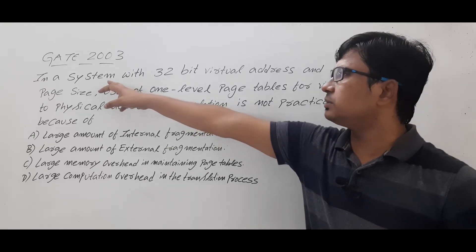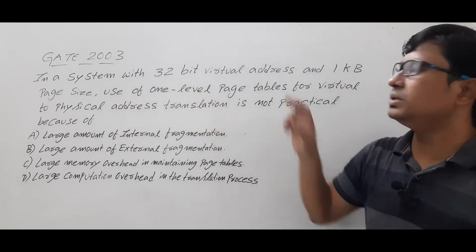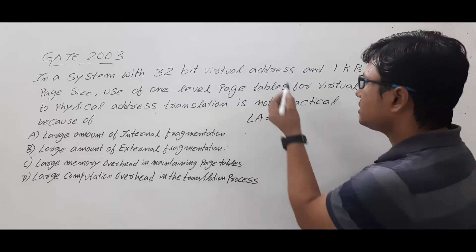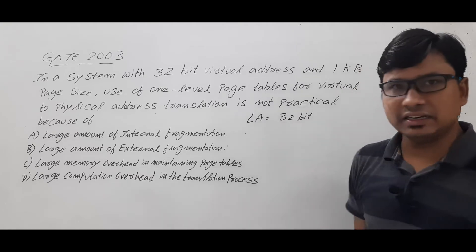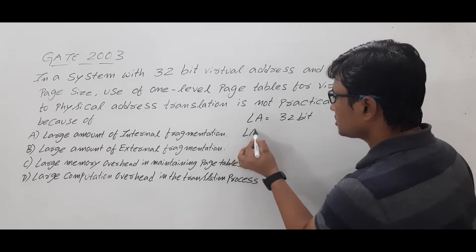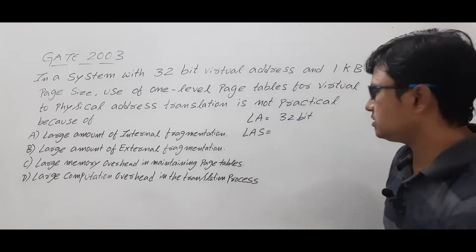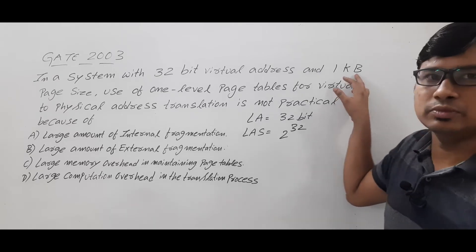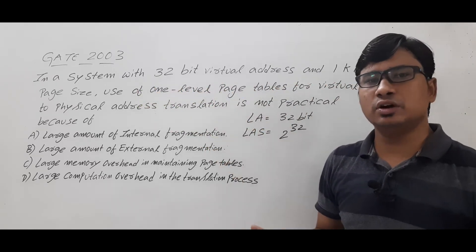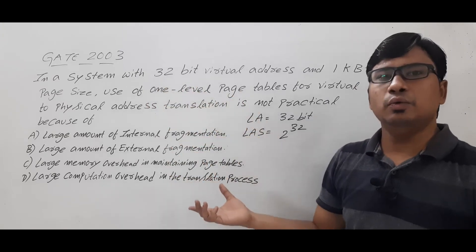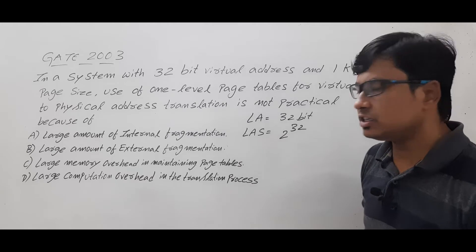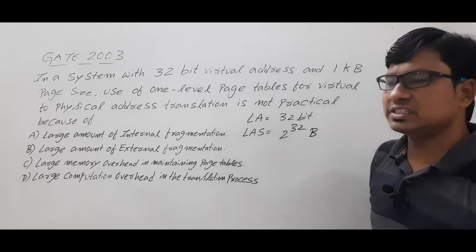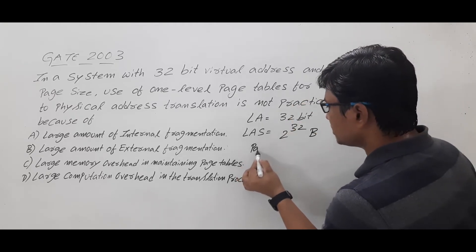If you look at the first statement in the given question — in a system with 32-bit virtual address — the virtual address is the same as the logical address. Since they have provided 32-bit, logical address is 32-bit. From the logical address we can find the logical address space, which is 2^32. Since nowhere they mention word size, we can consider this as byte addressable, so logical address space is 2^32 bytes. The page size is 1 KB, which is 2^10 bytes.